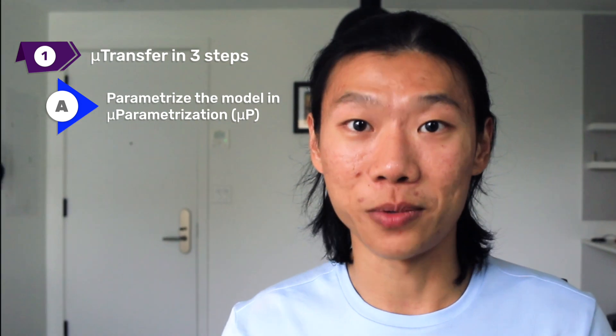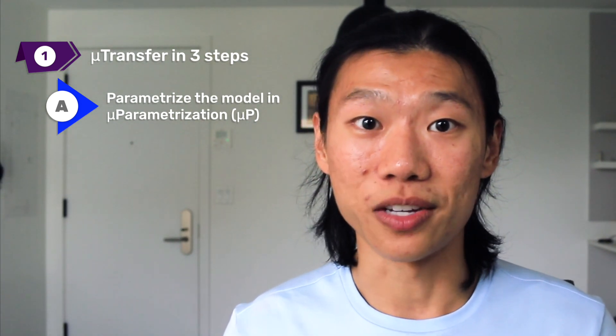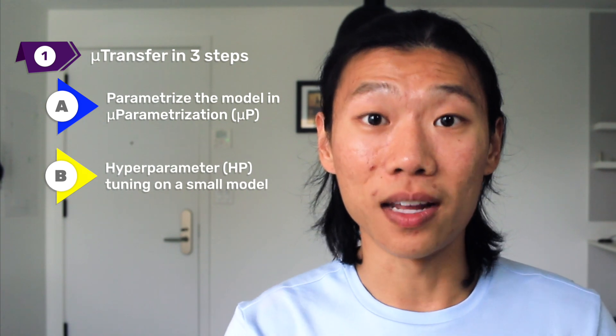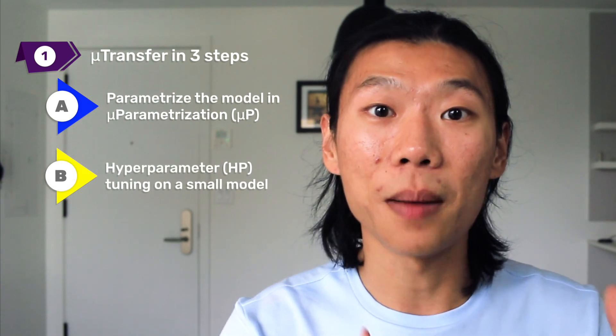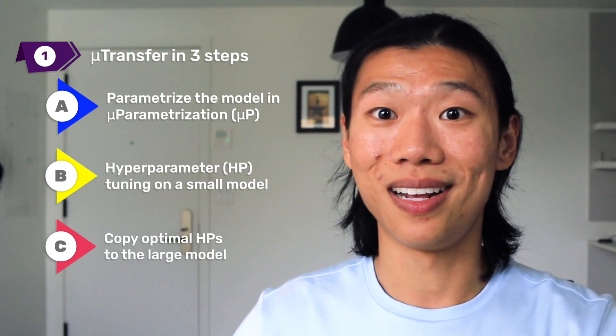First, let's break down the mechanics of MuTransfer. It has three simple steps. First, parameterize your model in the Mu parameterization, or MuP. Second, search for hyperparameters on the small model. Finally, copy the optimal hyperparameters from the small model to a large model.